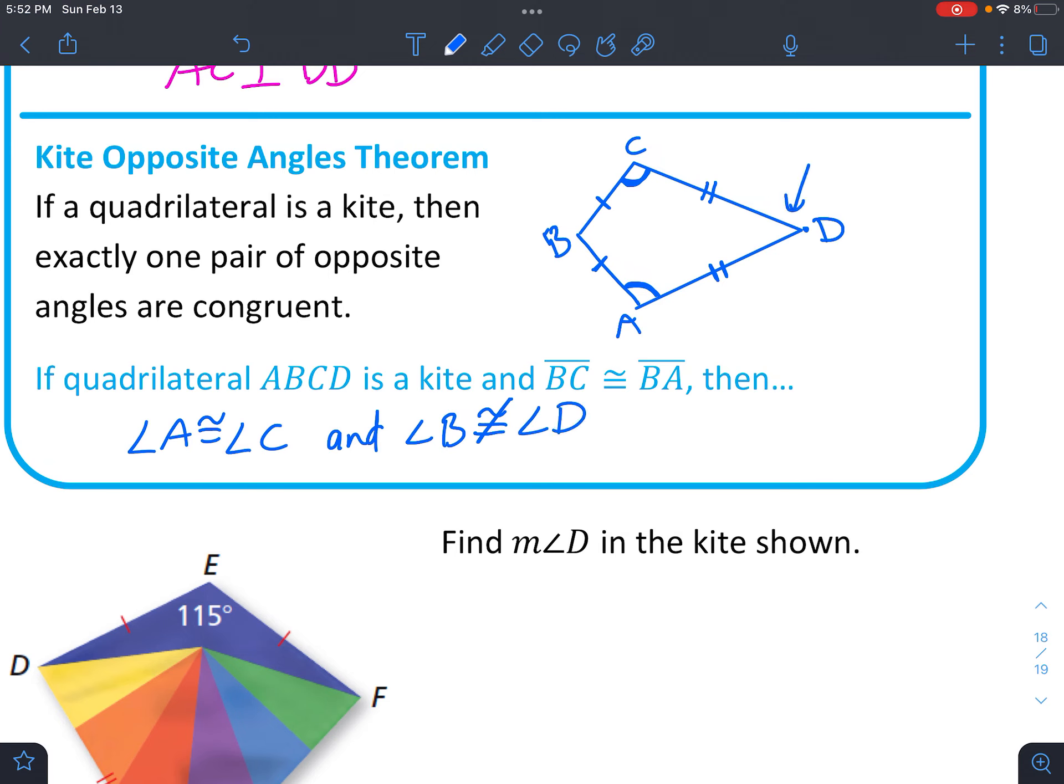So it's never going to be congruent. One side is going to be smaller and one side is going to be bigger. That's just the way the shape, the shape of the kite.